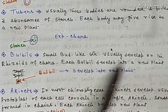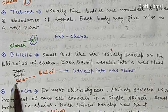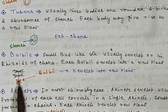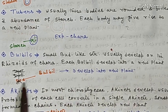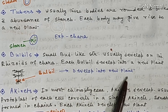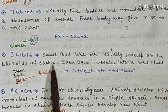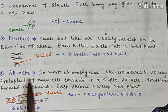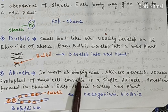Next is bulbils. Bulbils are small bud-like structures that usually develop on the rhizoids of Chara. Here you can see the diagram of Chara showing the rhizoid, where a small bud-like structure is developed. Each bulbil develops into a new plant. Chara reproduces vegetatively by the formation of bulbils.